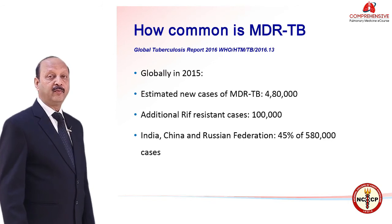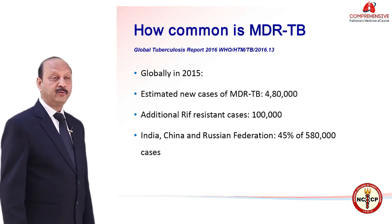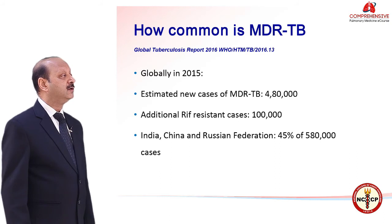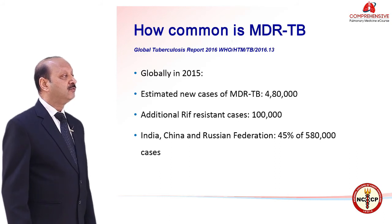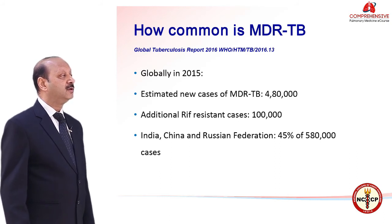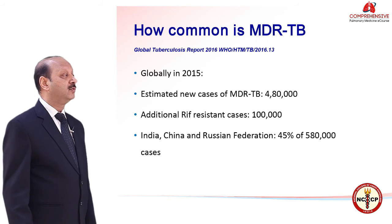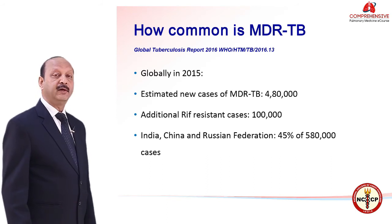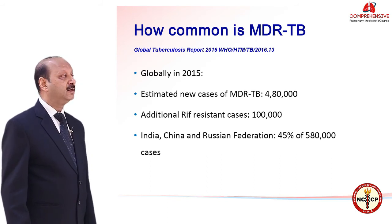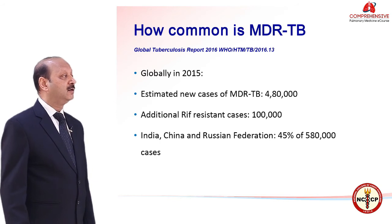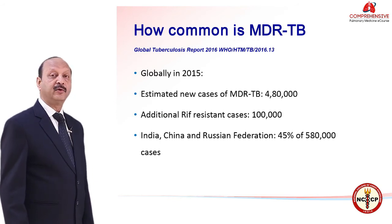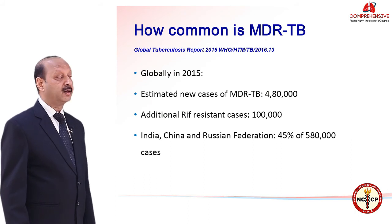Looking at how common MDR tuberculosis is globally, the 2016 report found that in 2015 alone there were 4.8 lakh cases of MDR tuberculosis. Additionally, mono-rifampicin resistance cases were 1 lakh. India, China, and the Russian Federation contributed around 45 percent of these 5.8 lakh combined cases.